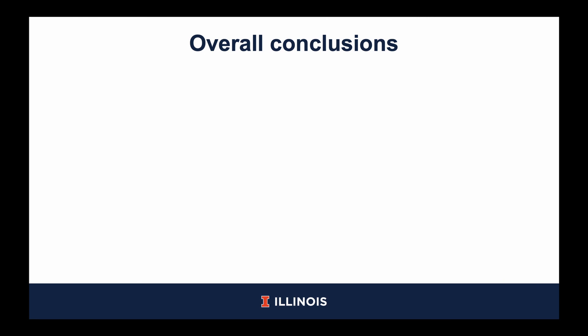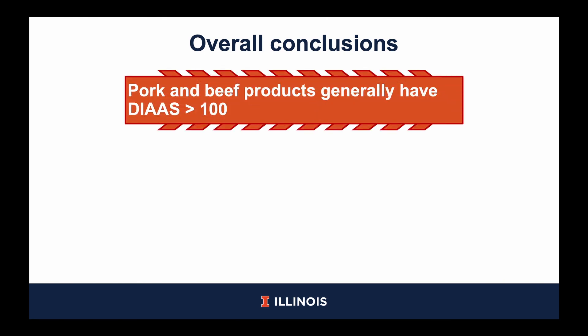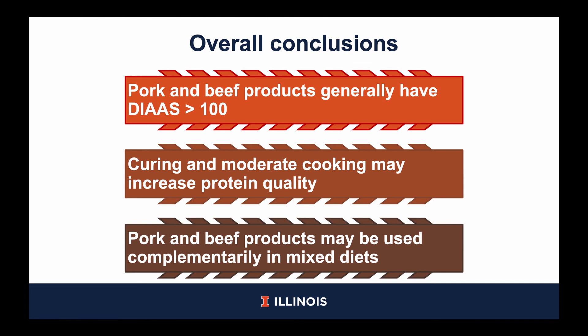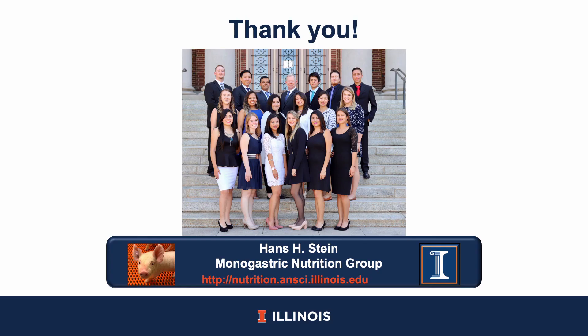Overall, we can conclude that pork and beef products generally have DIAAS greater than 100, meaning they are excellent quality protein sources; that curing and moderate heating of pork and beef may increase the protein quality of the end product; and that pork and beef may be used to complement lower quality proteins to ultimately have a mixed meal that is balanced in indispensable amino acids. With that, I would like to thank you for listening to this podcast, and if you would like to know more about this topic or nutrition in general, I encourage you to visit our website at nutrition.annsci.illinois.edu.